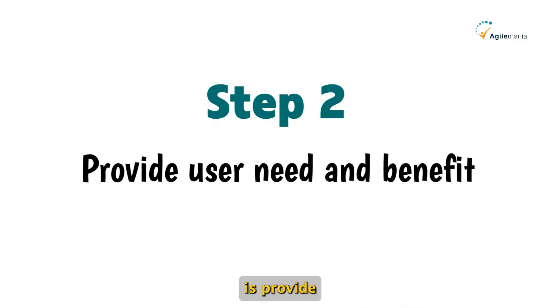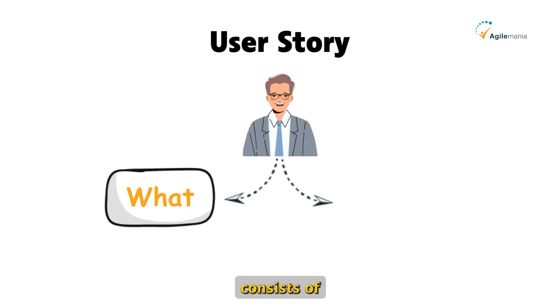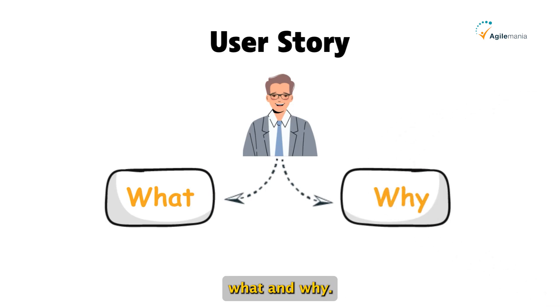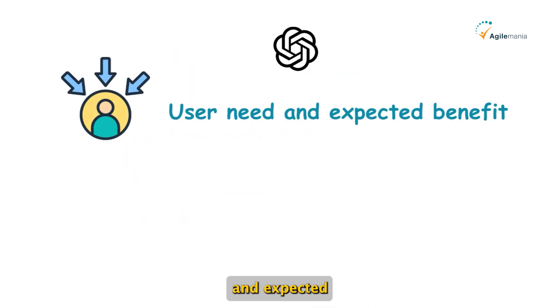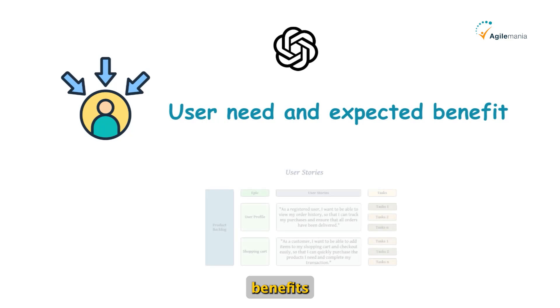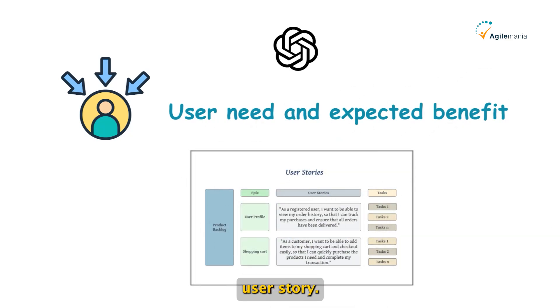The next step is to provide user need and benefit. A good user story consists of who needs to do what and why. So make sure to provide ChatGPT with a user need and expected benefit so it can construct a well-formed user story.